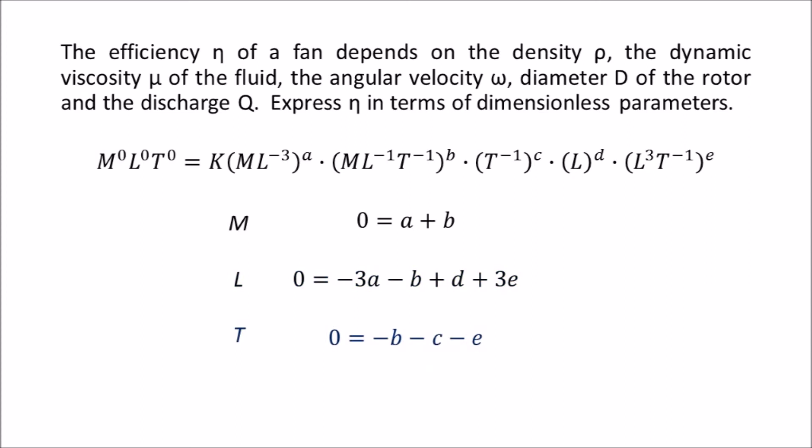And finally, for time, we have zero again on the left-hand side, minus b from the second term on the right-hand side, minus c from the third term on the right-hand side, and minus e from the fifth term on the right-hand side.